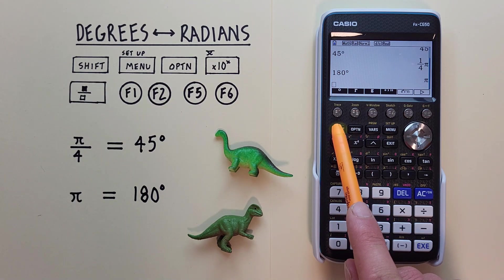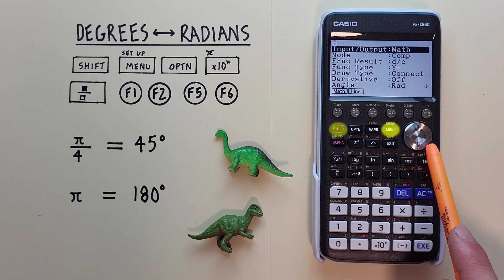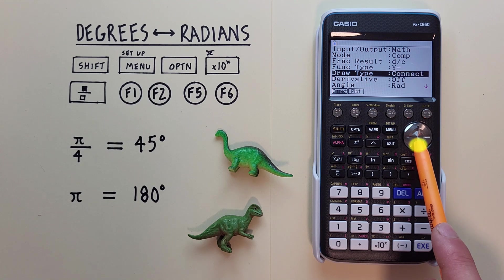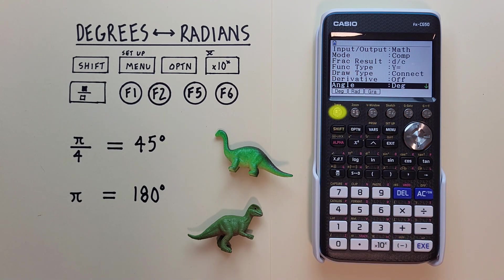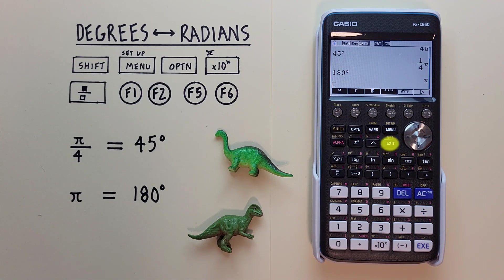So if we want our results in degrees, we go shift menu to the setup menu, scroll down, and change this to DEG. There we go.